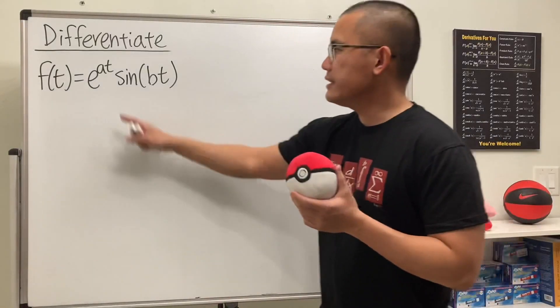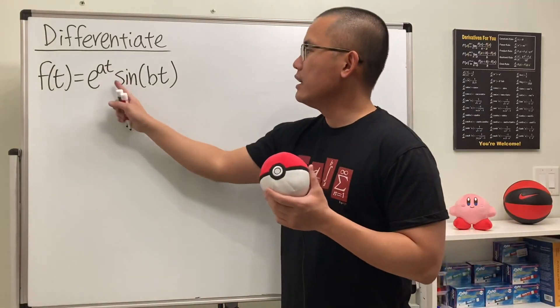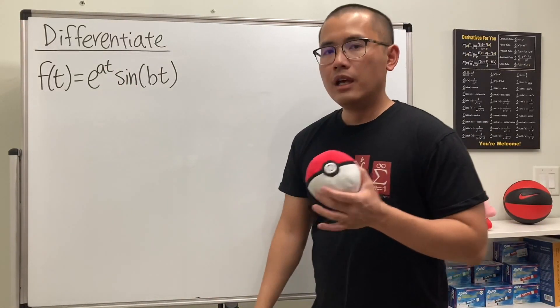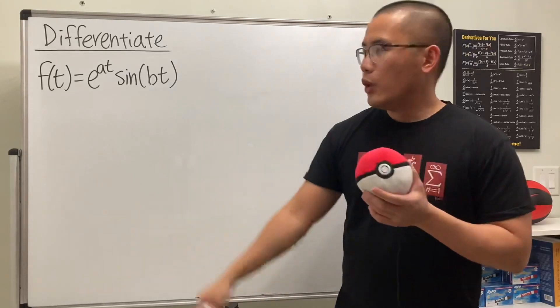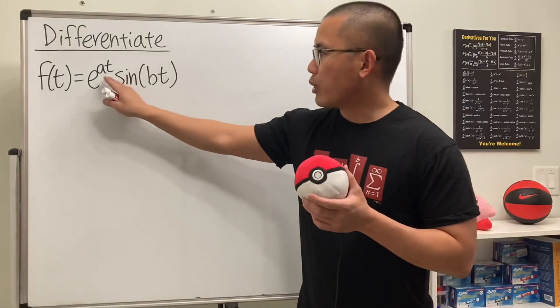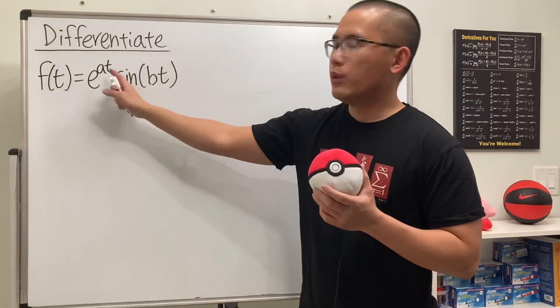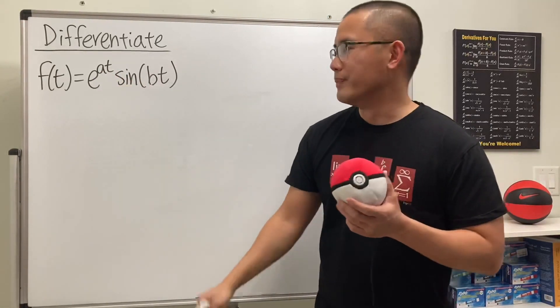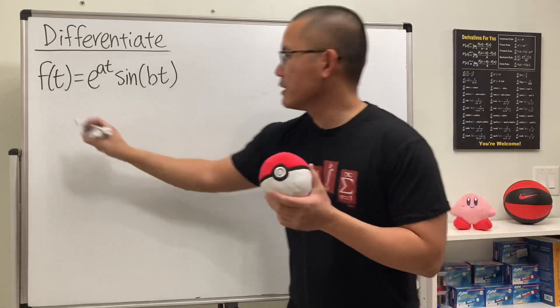We are going to differentiate e to the at times sine of bt. Here we will have to use the product rule, and we will also see that we have to use the chain rule.